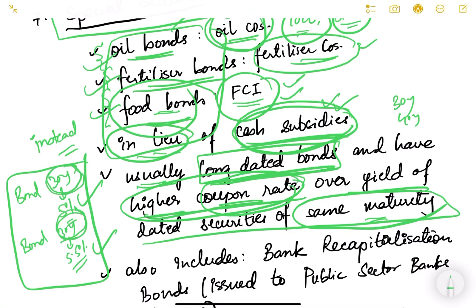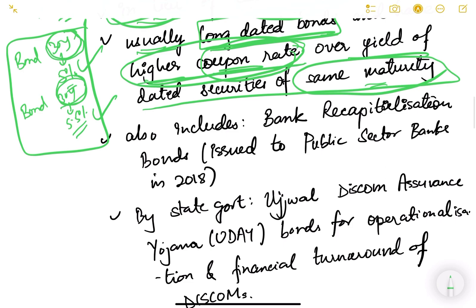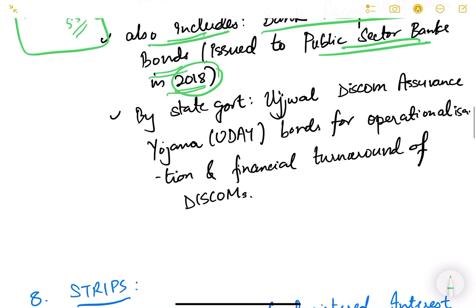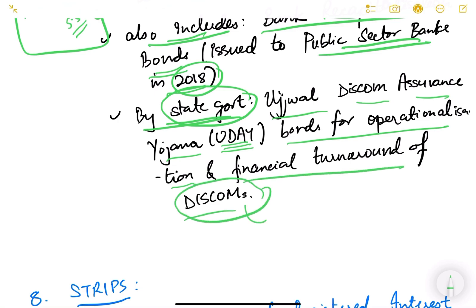This special security category also includes bank recapitalization bonds, which were issued to public sector banks in 2018 in order to improve their health — the finance minister had announced these bank recap bonds. Additionally, state governments have issued special securities under the UDAY Yojana — Ujjwal DISCOM Assurance Yojana — which are bonds for the operationalization and financial turnaround of DISCOMs, the power distribution companies.